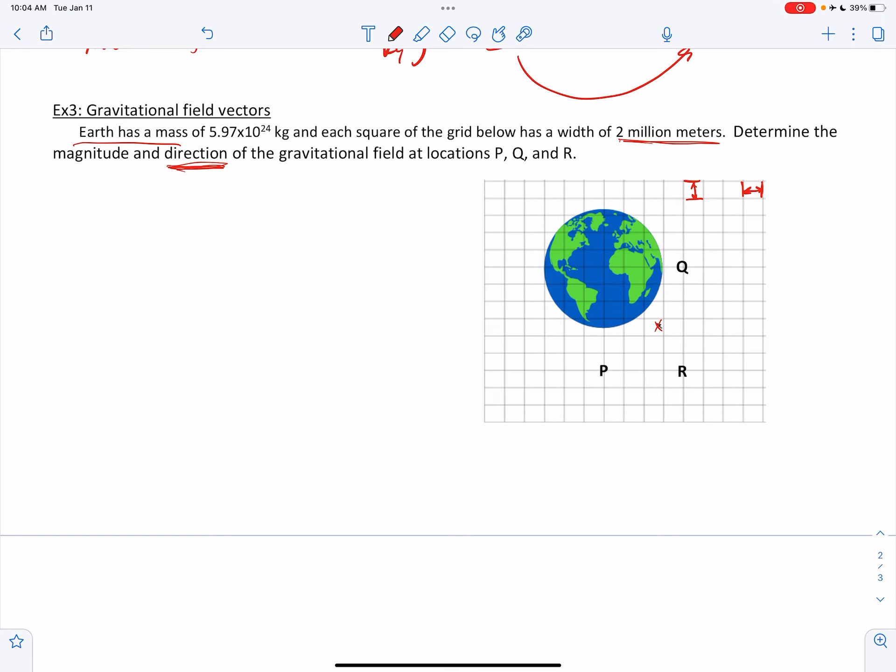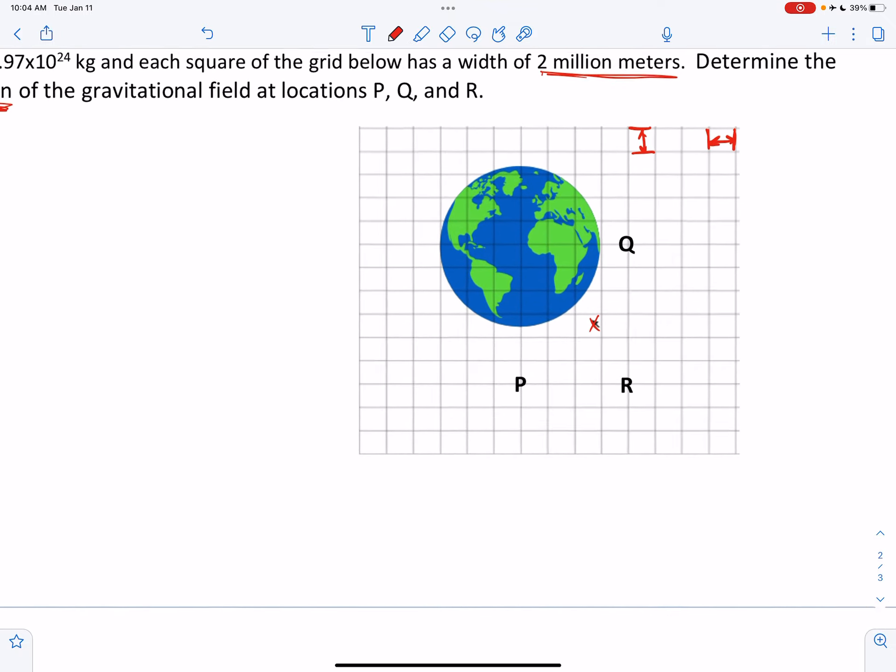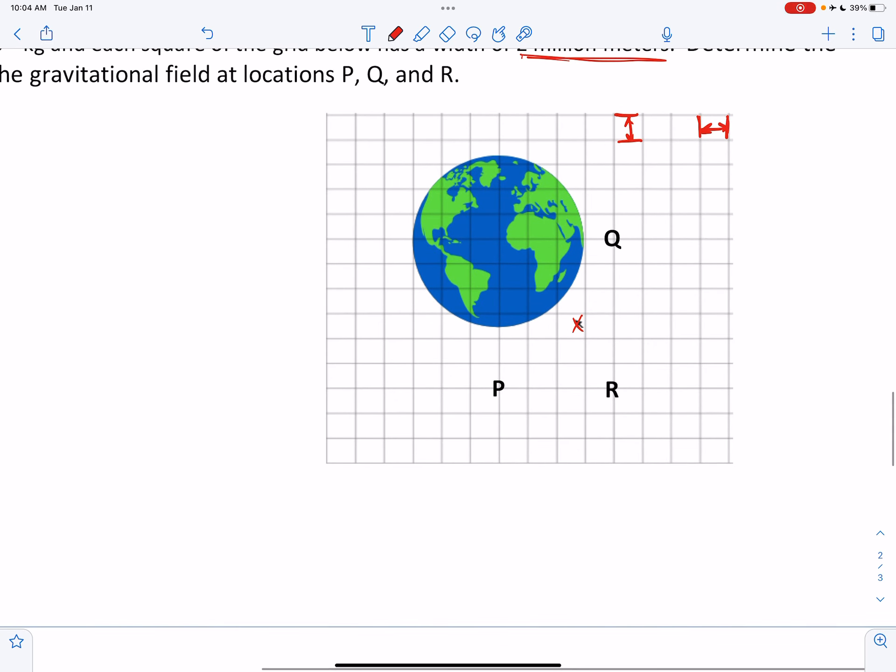Gravity is an attractional force, and so in the space around the Earth, little masses would be attracted to the center of the Earth. So if we're thinking about the direction of the gravitational field at P, Q, and R, we would just go to those locations and point towards the center of the Earth.